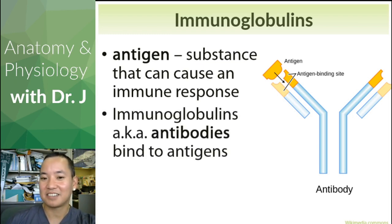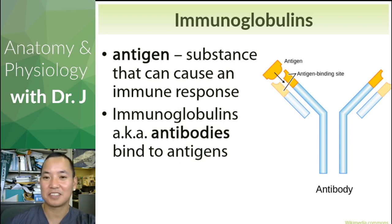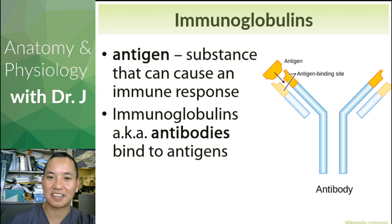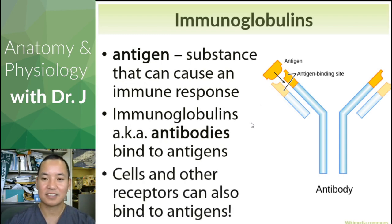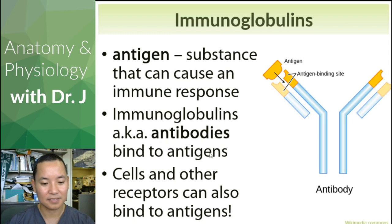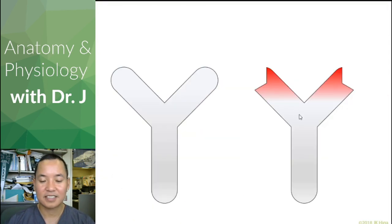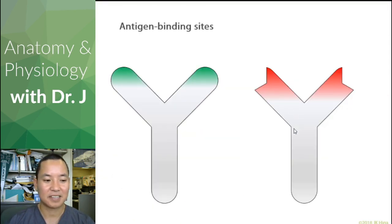Immunoglobulins — this is how you're able to do blood typing and detection using immunoglobulins and agglutination. Antibodies can recognize antigens, but that's not the only thing in your body that can recognize antigens. Your immune response does involve antibodies, but it's more than antibodies — it also involves cells, other receptors, and other proteins that can bind to antigens as well.